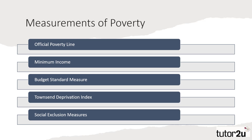Thirdly, the budget standard measure, based on the cost of a series of items that families would ordinarily buy. A fourth measure is the Townsend Deprivation Index, based upon relative deprivation, comparing the ability of individuals to attain certain goods and services. Finally, we'll examine some of the social exclusion measures, an important yet often hidden aspect of poverty.